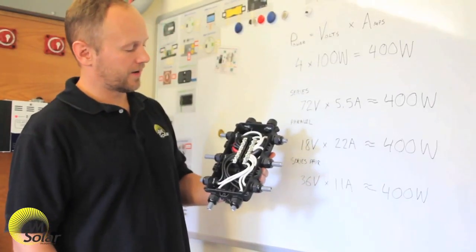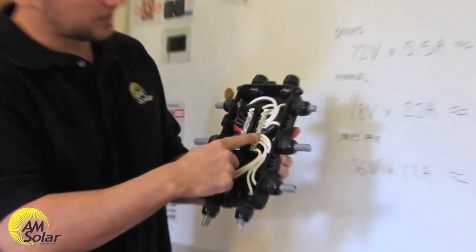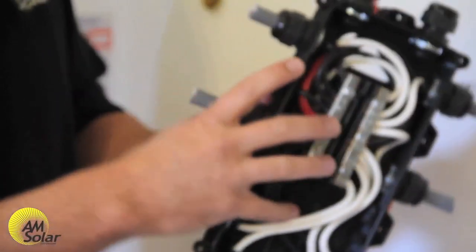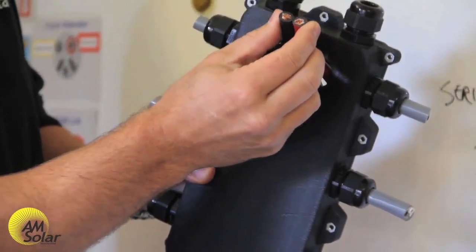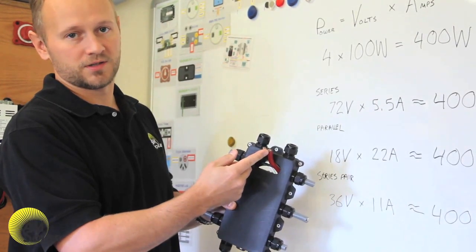This is an example of a combiner box with parallel connections. You have positives all tied on this side and negatives on this side, leaving the combiner box with very thick cables going down to the charge controller. Factory pre-wires don't use as thick of cables as this.